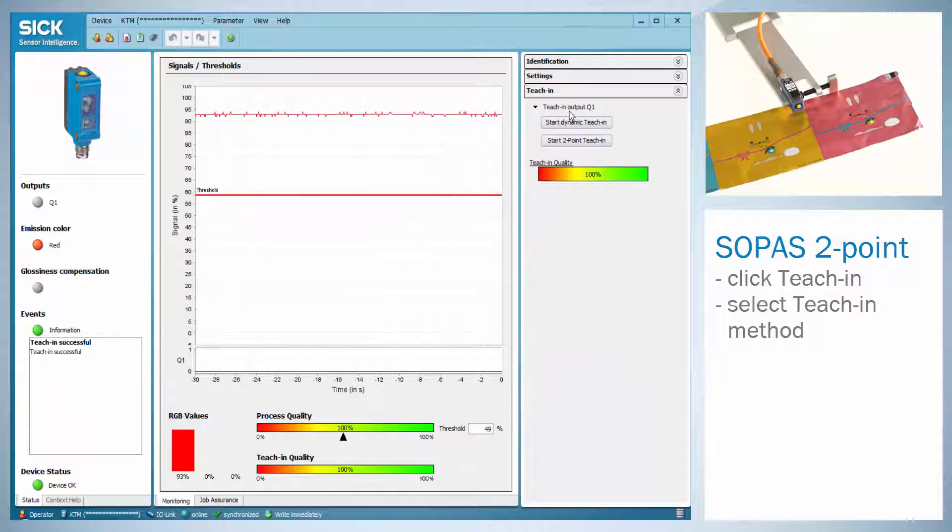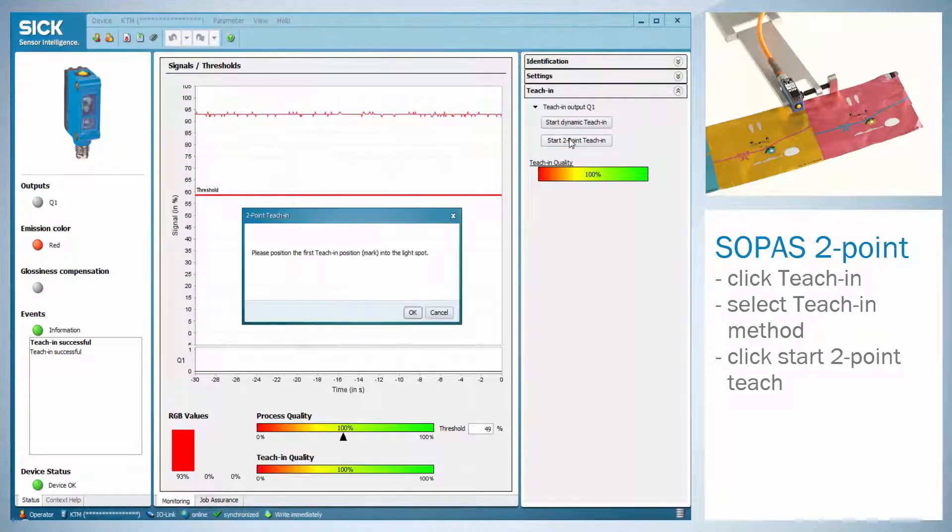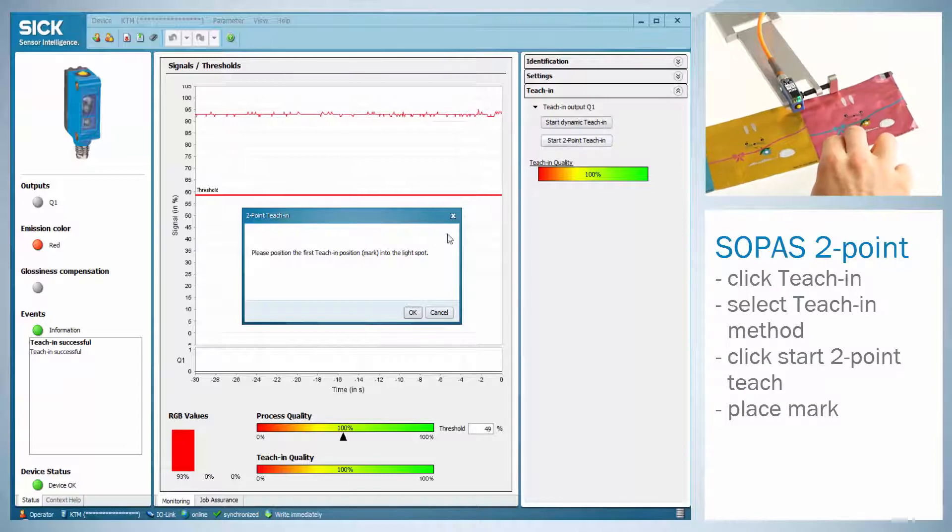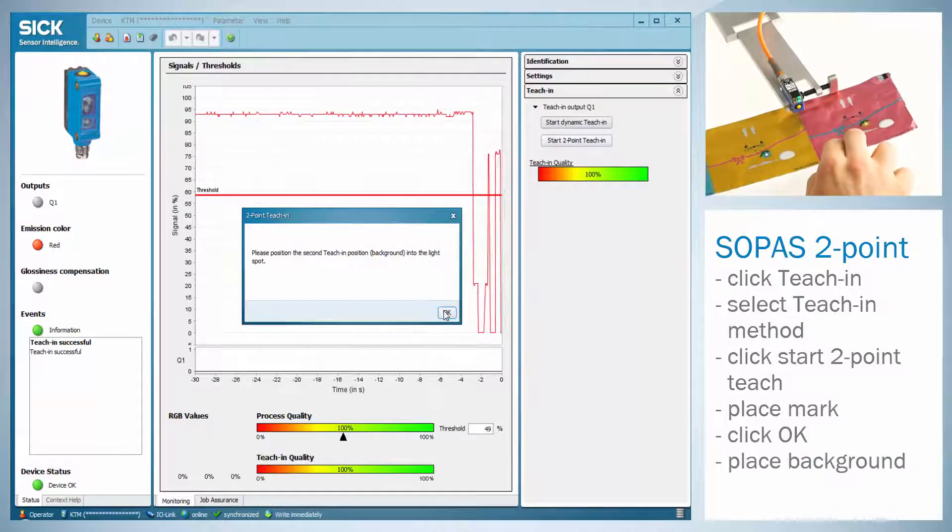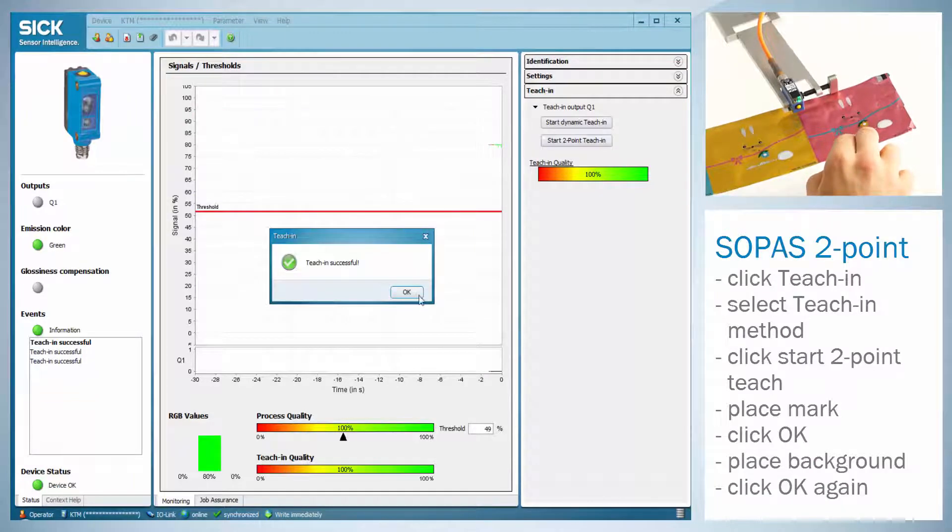Then perform the teach-in procedure as described before in the manual mode. For the two-point or static teach, click on Start two-point teach and place the mark under the light spot. Then click OK. Now place the background under the light spot and press OK again. A message confirms the successful teach.